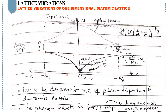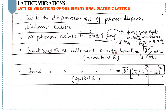Now let's talk about the dispersion relation of the diatomic lattice. It shows an acoustical branch as an allowed energy band and an optical branch as another allowed energy band, but there is a forbidden band between both. No phonon exists in the frequency gap. This frequency gap depends on the masses M1 and M2. If the masses are the same, there is no gap, which is consistent with the monoatomic lattice case.